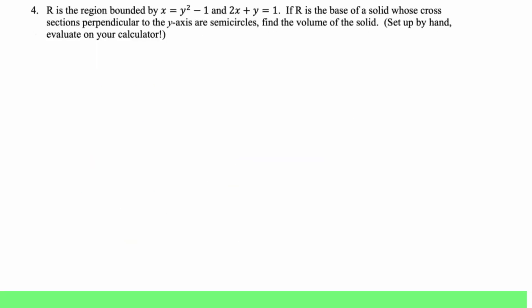R is the region bounded by x equals y squared minus one and two x plus y equals one. If R is the base of a solid whose cross sections perpendicular to the y axis are semicircles, find the volume of the solid. We're going to set up by hand and then evaluate on a calculator, thankfully, because I do not want to do that by hand. All right. I'm going to start off by kind of sketching this region. So y squared minus one is a parabola that opens to the right. If x is zero, you get negative one and then you're just going to get bigger values. So it kind of looks like this.